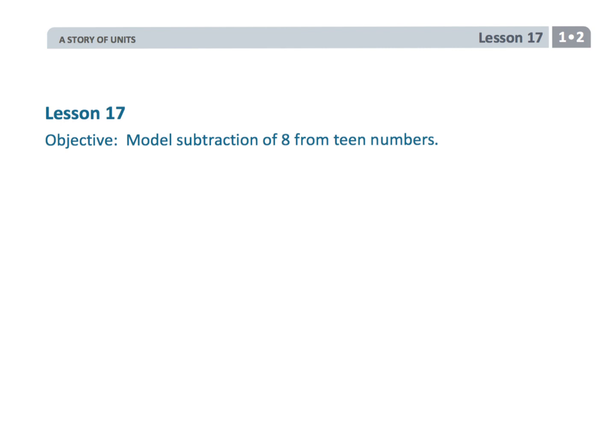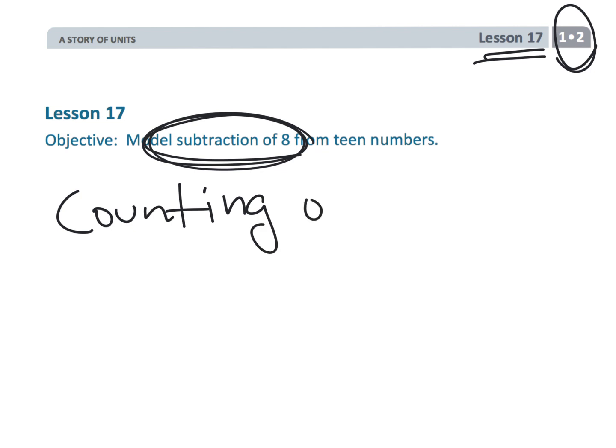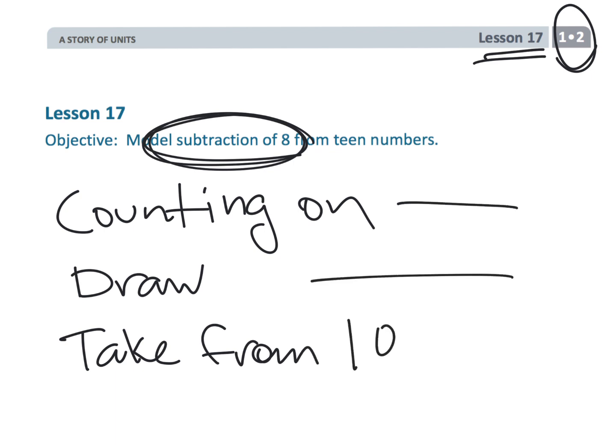And that wraps up grade 1, module 2, lesson 17, where we are now subtracting by 8. And we're still using two strategies. We're getting, we're letting, actually three. We're letting students use the counting on strategy. We're letting students use the drawing strategy. And we're letting students use the take from 10 strategy, kind of like the decomposing. And so we're giving students choice. And that is how our students are going to learn math by knowing that they're in charge of the math rather than the math telling them what to do.